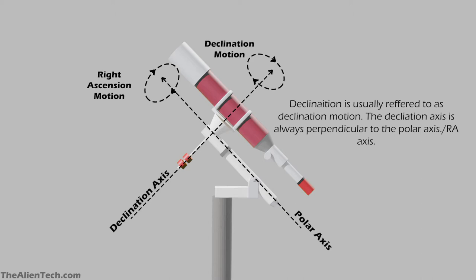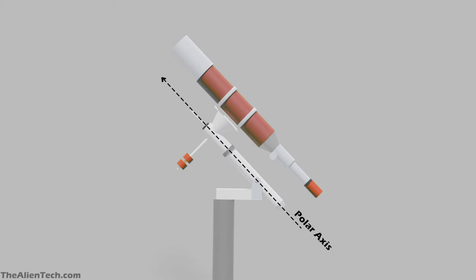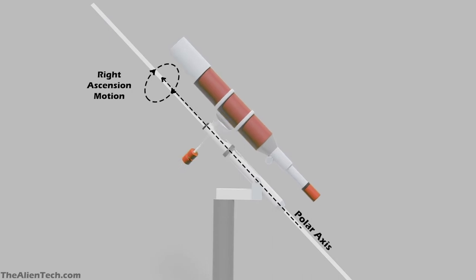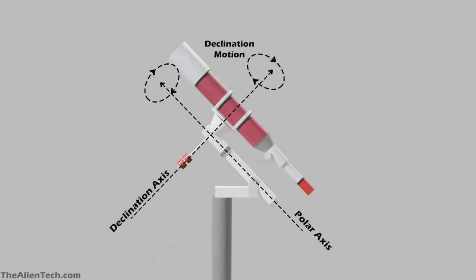The right ascension axis, you can also call this a polar axis, as this axis is always parallel to the earth's axis of rotation. When your telescope moves around this axis in a circle, it is called right ascension motion. You can also consider right ascension as equivalent to longitude.